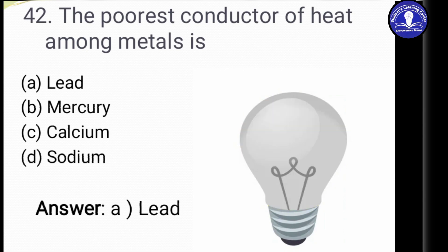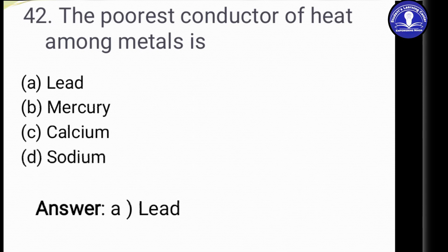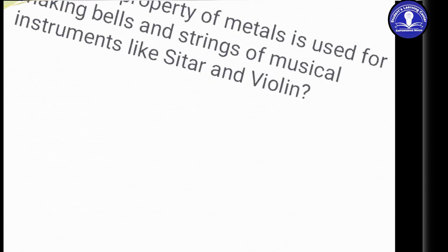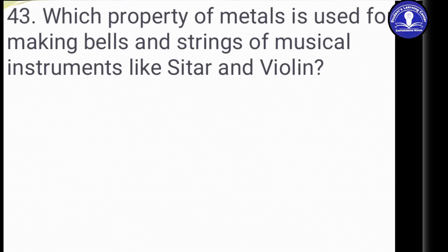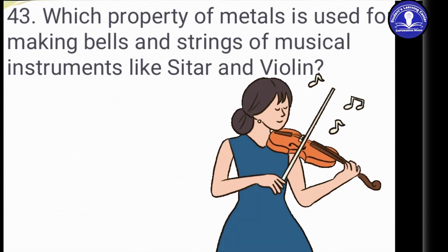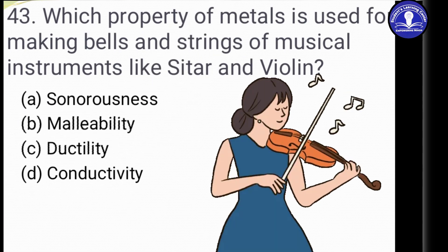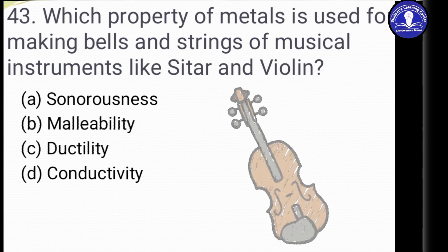Question 43: Which property of metals is used for making bells and strings of musical instruments like sitar and violin? Option A: Sonorousness. Option B: Malleability. Option C: Ductility. Option D: Conductivity.